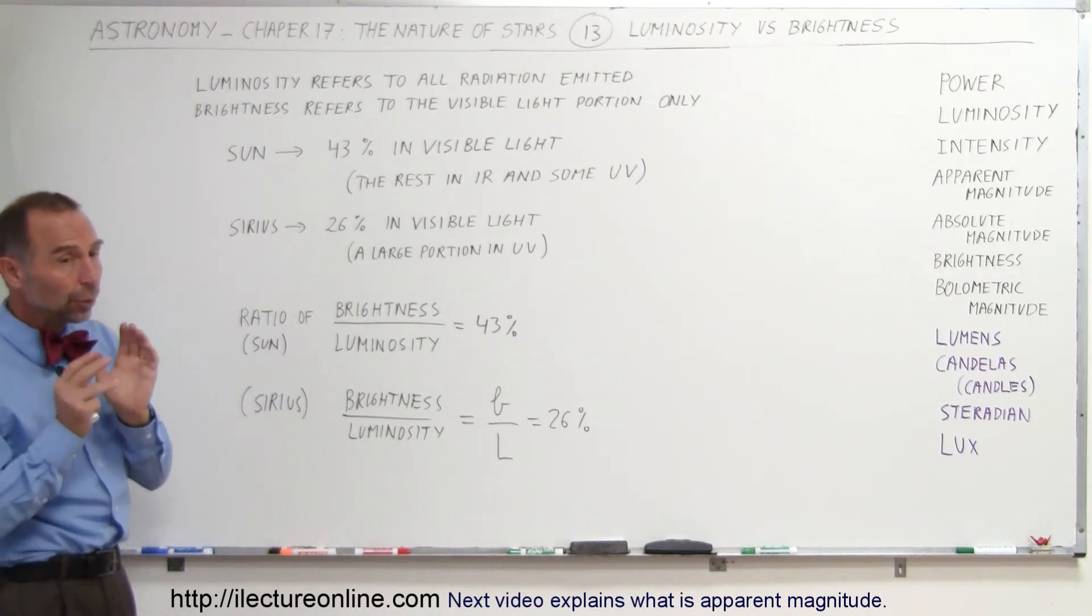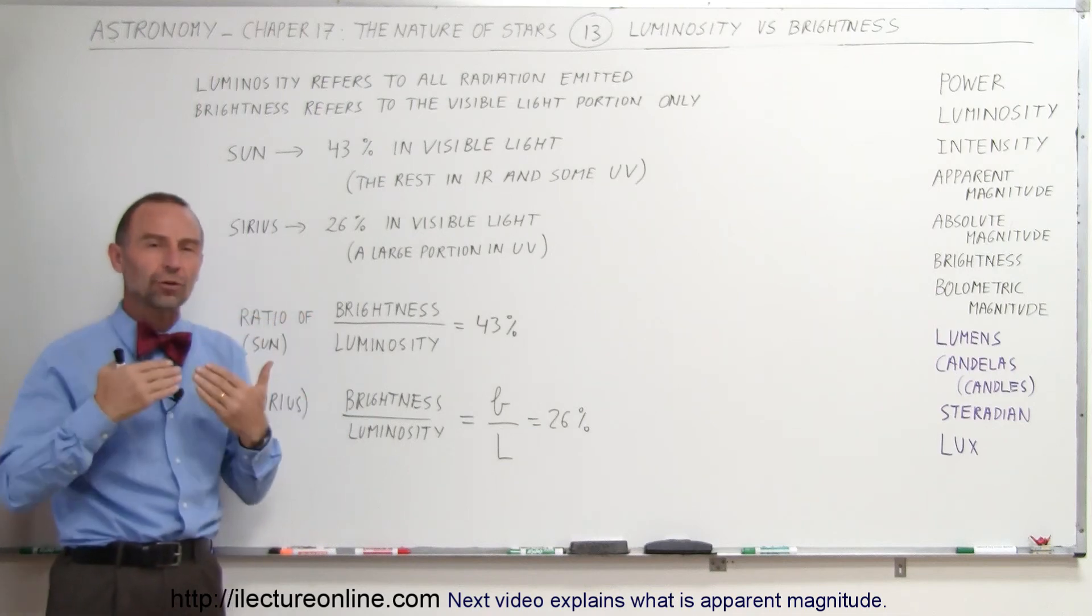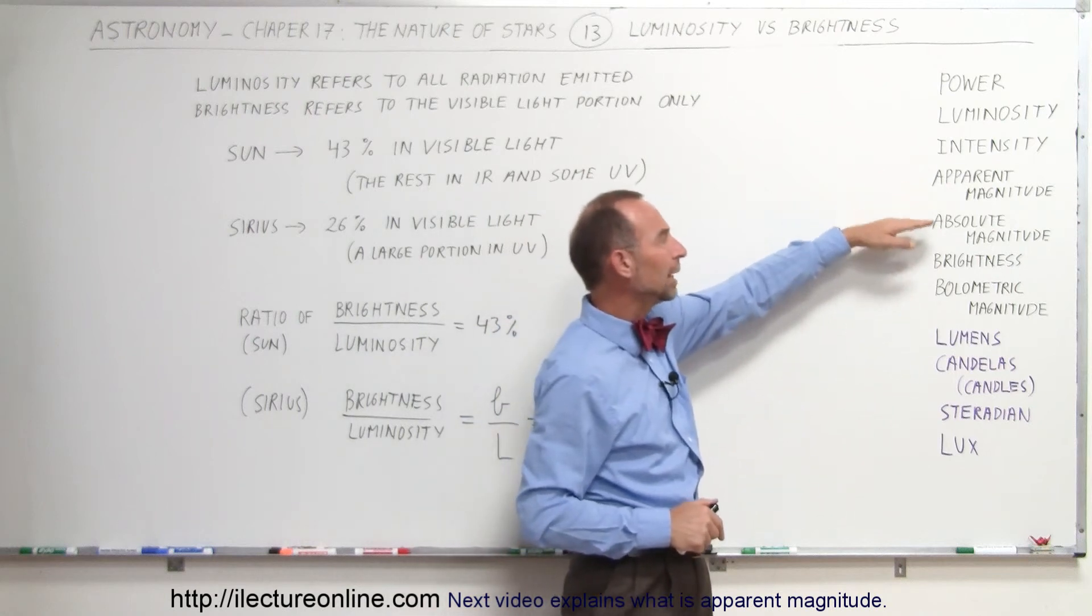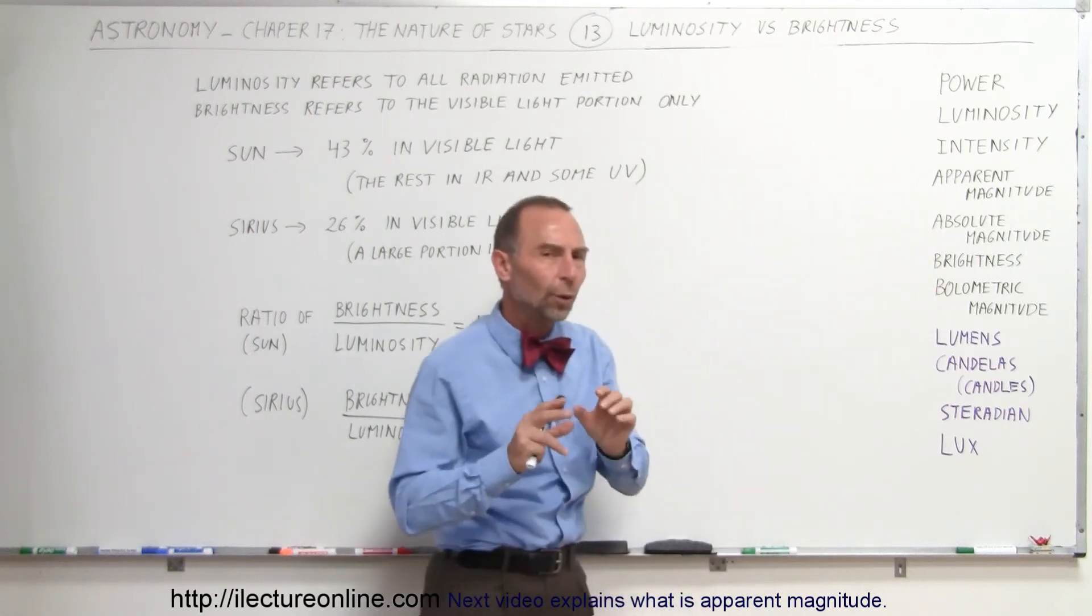Now we also talk about brightness in the intensity when it reaches the Earth, and that refers to the case where we talk about apparent magnitude and absolute magnitude, the brightness and the volumetric magnitude. So what do we mean there?